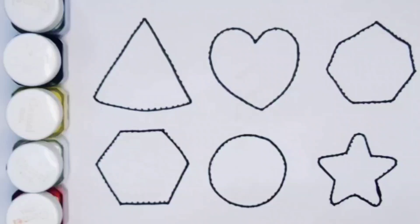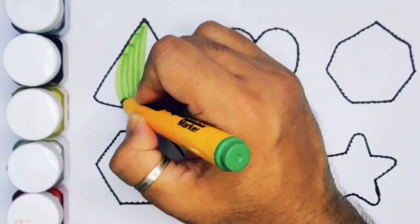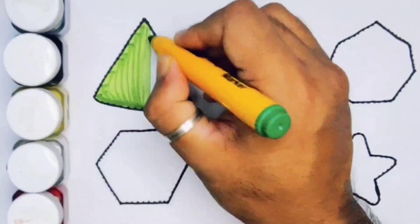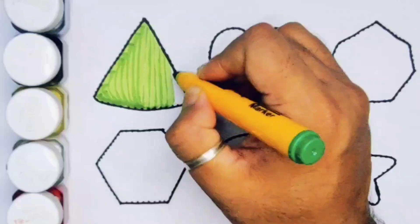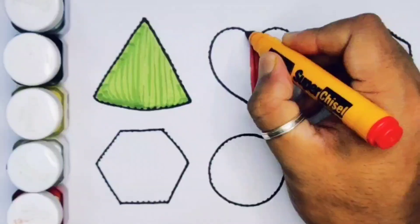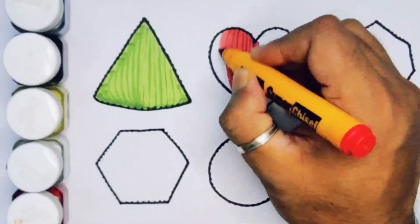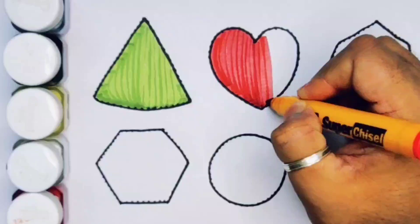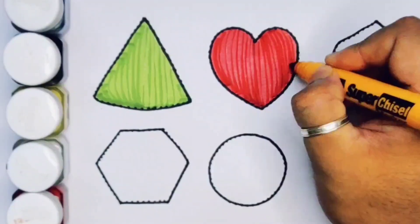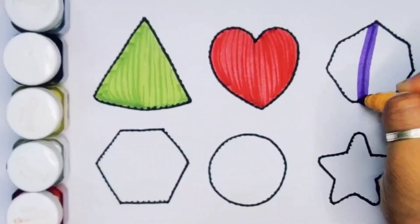Now we are going to put the color. Green color, triangle. Red color, heart. Next, purple color, heptagon.